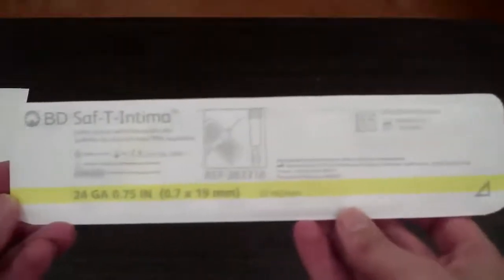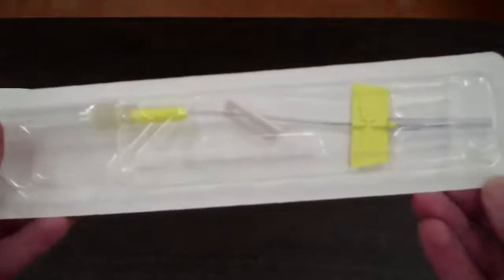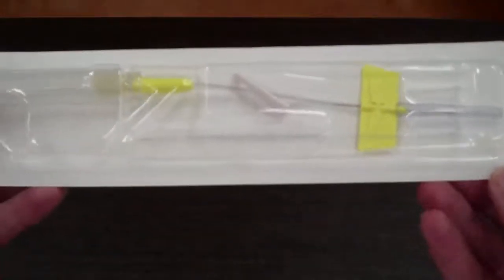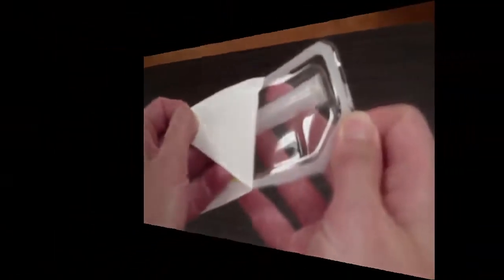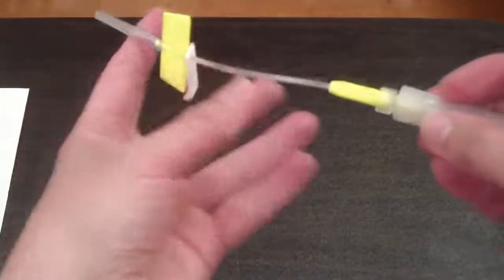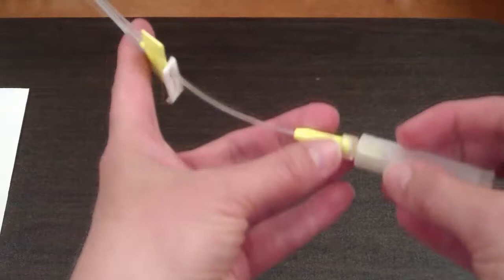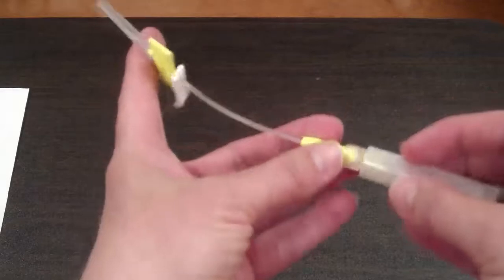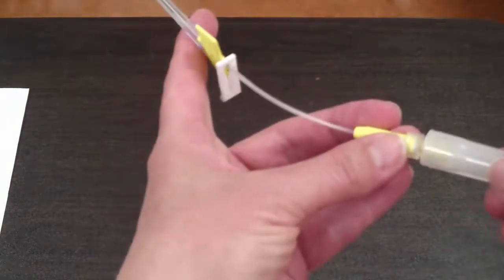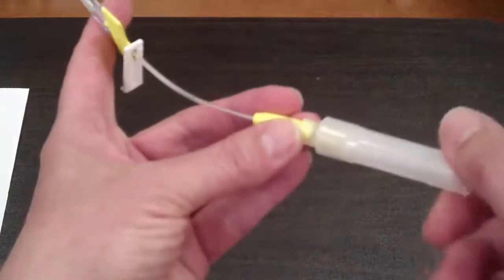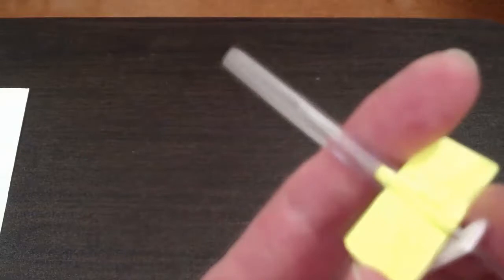This is the Safety T Intima subcutaneous butterfly. Remove the butterfly from the package. Rotate the safety barrel to loosen the needle. You do want to ensure that the bevel is up when you insert the butterfly. The pebbled side of the butterfly wings will be going against the client's skin.